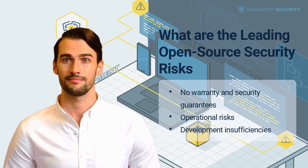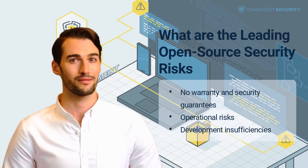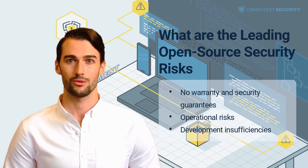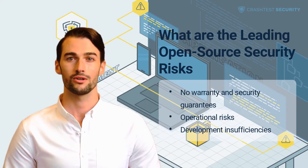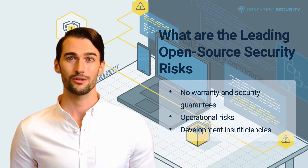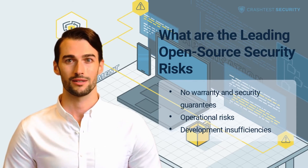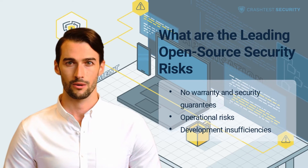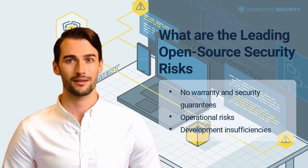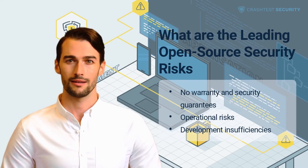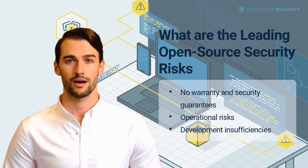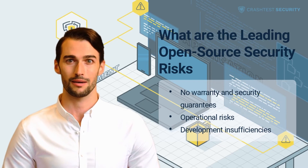Operational Risks. Tracking down the latest patch or fix can sometimes be a complicated process. Regular maintenance and checking that all open-source components are patched with the latest version is necessary. This requires companies to keep inventories and automate the process of keeping track to avoid any unplugged holes in the system. A further operational risk is having to fix vulnerabilities in projects that have been abandoned and have no community support anymore, requiring companies to set aside manpower and resources to track and secure such projects.